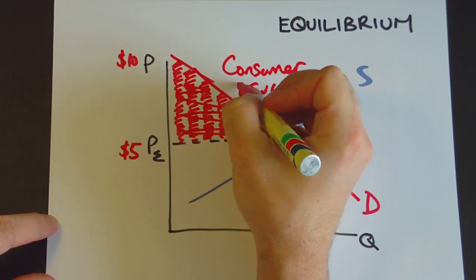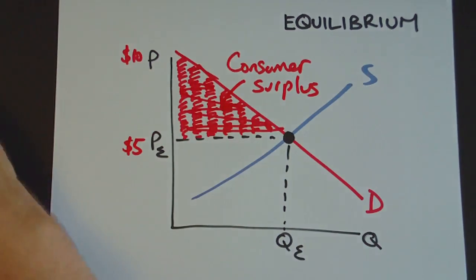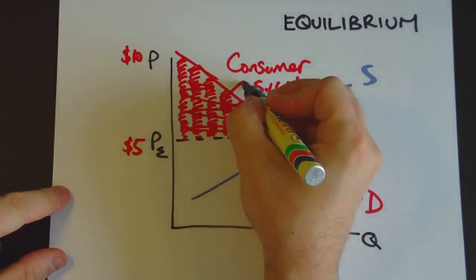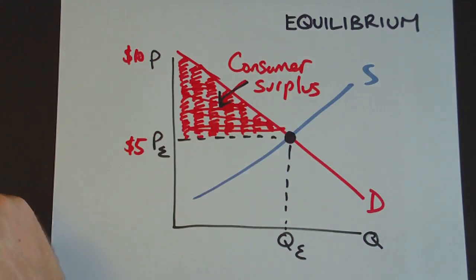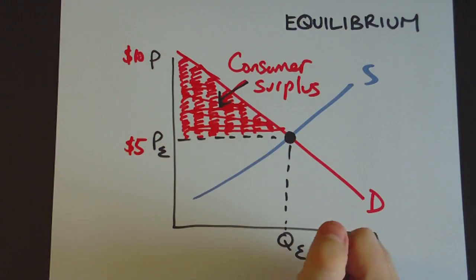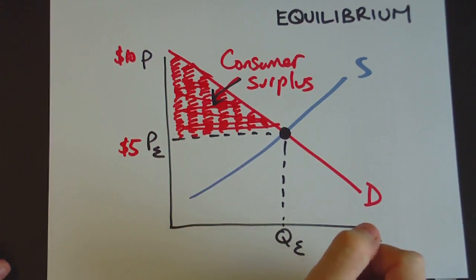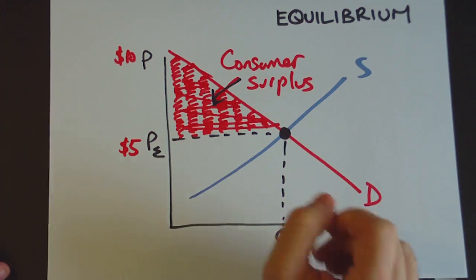It reflects the fact that consumers are getting a bargain. They're actually willing to pay more for the good but they're actually paying only the market price. And let's say that's $5 in this case. So that's consumer surplus.